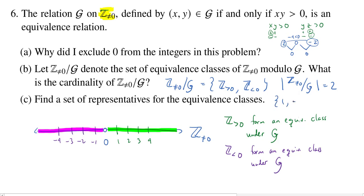Okay. How about one comma negative one? Oh, you don't like that one? Okay. How about 47 and negative 314? Why not? Just take any positive and a negative and you now have a set of representatives for the equivalence classes because you've chosen exactly one element from each equivalence class.